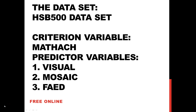Let's take a look at our data set. The data set is HSB 500, which stands for High School and Beyond. Our criterion variable, or dependent variable, is math achievement — a 25-item mathematical achievement test with scores ranging from negative 8.33 to 25. Our first predictor variable is Visual, which is a 16-item test of visualization in three dimensions for determining how a three-dimensional object would look.